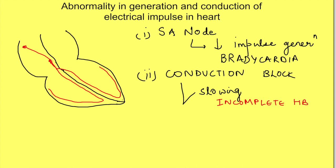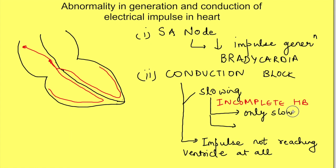Another level is when there is complete block of conduction from atria to ventricle. That means no impulse which is generating at the atria is reaching the ventricles. That is known as complete heart block. Now incomplete heart block may also be of different grades.